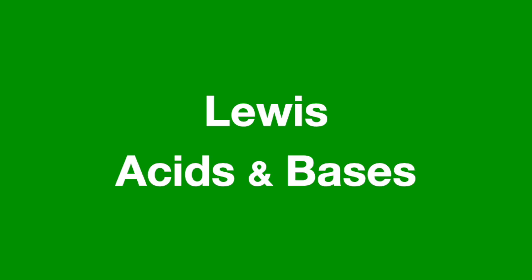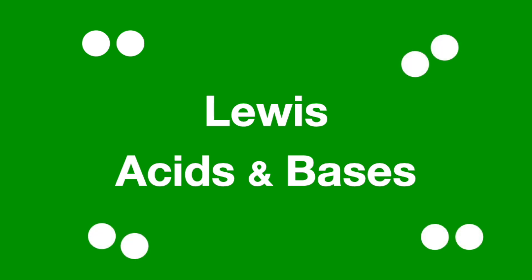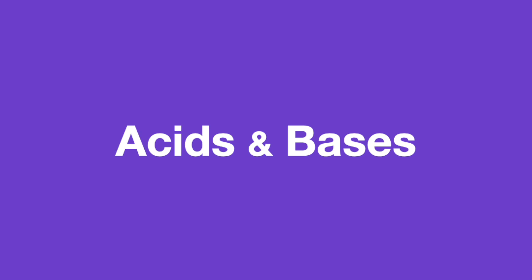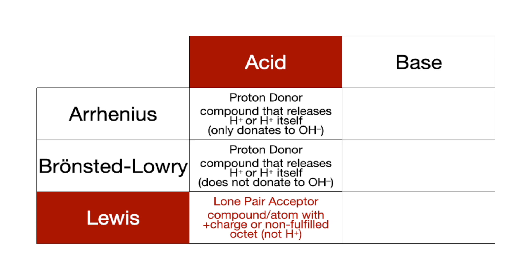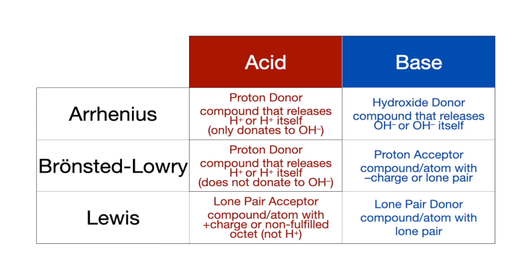To help remember what Lewis acids and bases are, think of Lewis dot structures, where dots are electrons. So Lewis bases transfer two electrons to Lewis acids. Here's a summary of all the different types of acids and bases, so pause and screenshot it if you want to keep it for your notes.